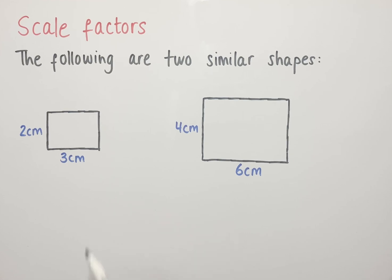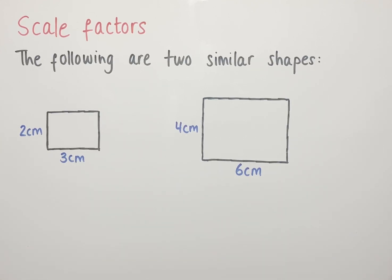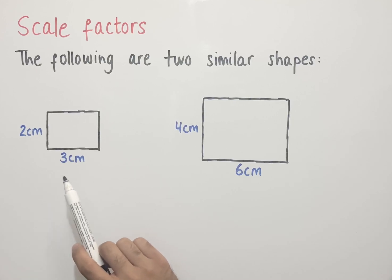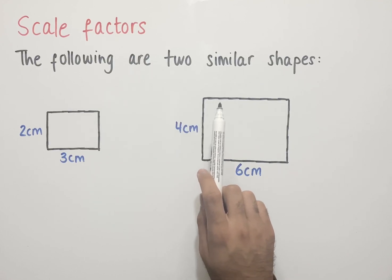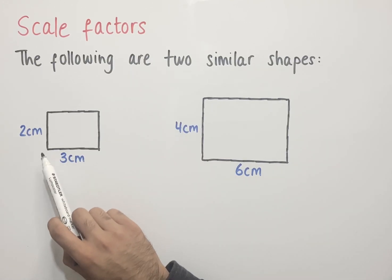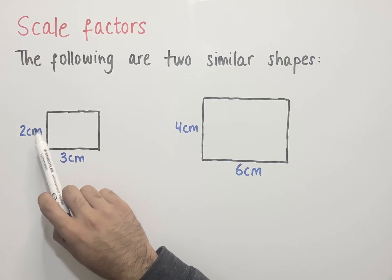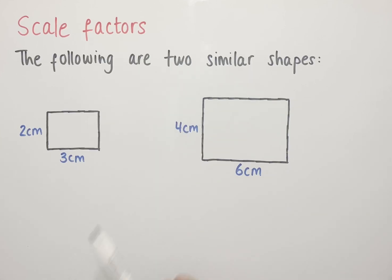The following are two similar shapes. We've got two rectangles and we've been given two side lengths for each rectangle. A scale factor is a number by which a quantity is multiplied to make it larger or smaller. Thinking about the lengths of both rectangles, comparing corresponding sides, if we multiply the height of this rectangle, which is 2 centimeters, by 2, we end up with the height of the second rectangle, which is 4 centimeters.